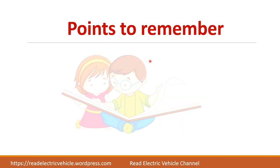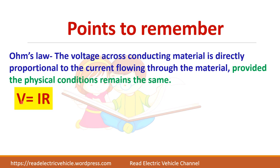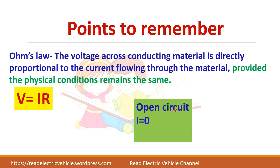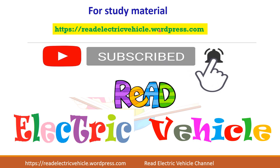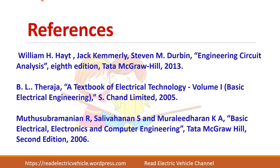To summarize: according to Ohm's Law, V equals IR, with limitations including constant temperature requirement and inapplicability to non-linear devices and non-metallic conductors. Under open circuit condition, I equals 0 and R is infinite. Under short circuit condition, V equals 0 and R equals 0. Study material is available on the website, and please subscribe to the channel.